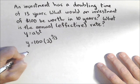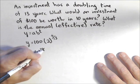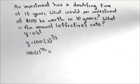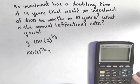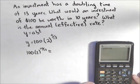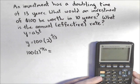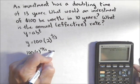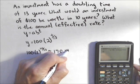To do 10 years, I got 100 times 2 to the 10 over 13. It's important how we put it into our calculator: 100 times 2 raised to the—now you've got to make sure you put the exponent in parentheses—10 divided by 13. We can round to two decimal places because we're dealing with money. So it's worth $170.44, roughly.